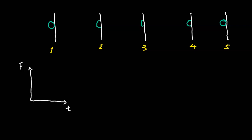Now let's look at the concept of impulse. Here we have a ball that's hitting the wall. Initially the force is fairly small, and then as it gets compressed it gets larger. The wall is pushing on the ball with a lot of force, and then as it bounces back the force decreases. So the more deformed the ball is, the more force the wall is pushing on it. On a force-versus-time graph, the force increases and then decreases. The area under the curve on this force-versus-time graph is a quantity we call impulse.